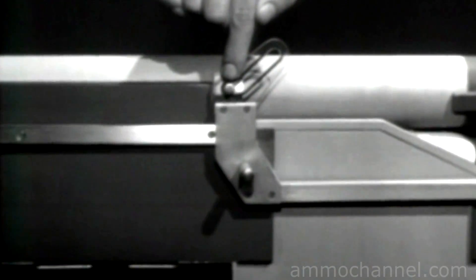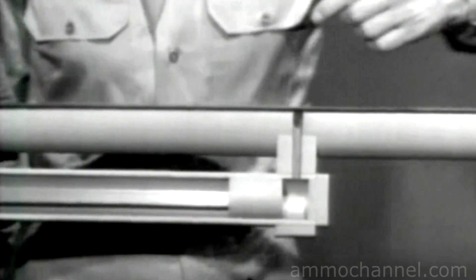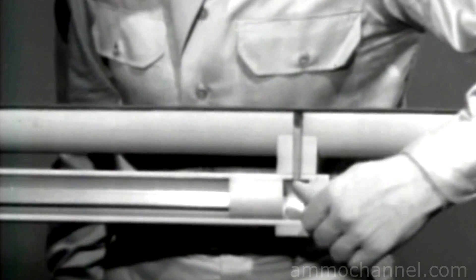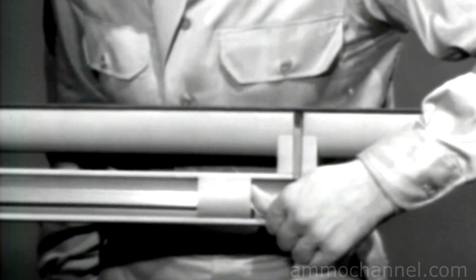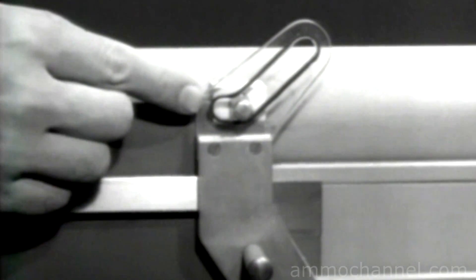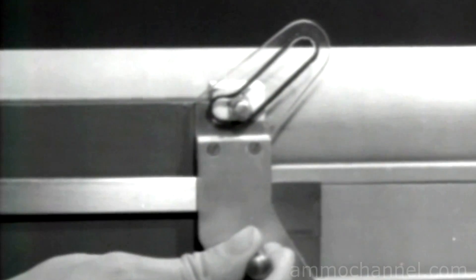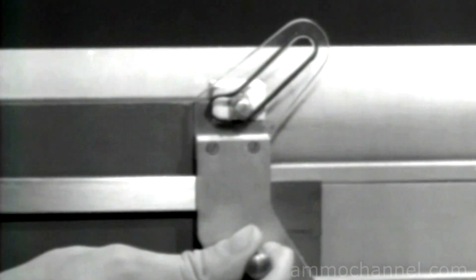The operating rod has a slot to unlock the bolt. When the piston is forced back by the gas, it moves the operating rod. The operating rod moves back alone a short distance before opening the bolt. This gives the bullet time to leave the barrel, and when the bolt opens, no dangerous gas will escape to the rear.